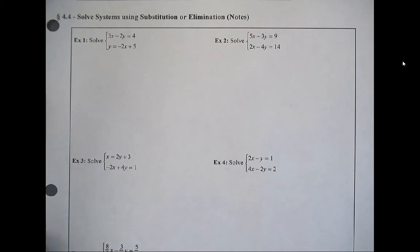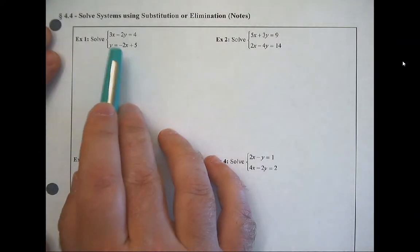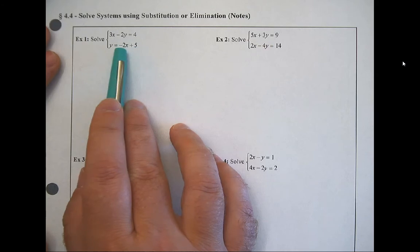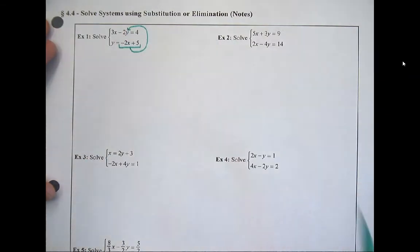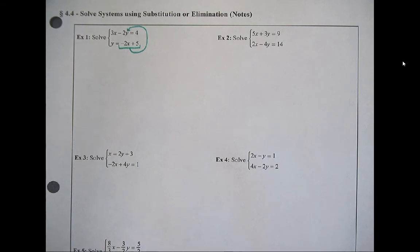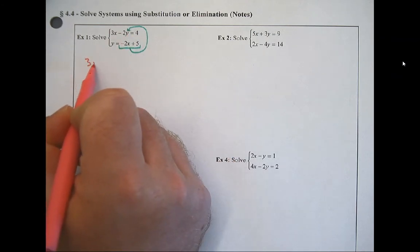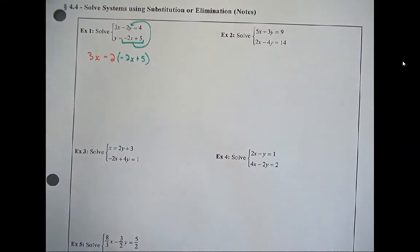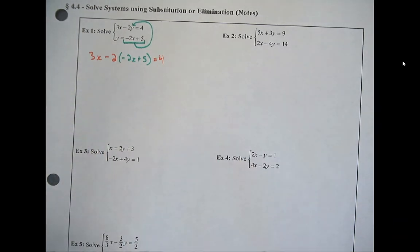This will be pretty much review for you — kids are generally quite confident in this type of problem if they've gotten this far in math. We want to solve this system using substitution or elimination. In this case, y is already by itself — y equals this expression — so I can take what y equals and substitute it into the other equation.